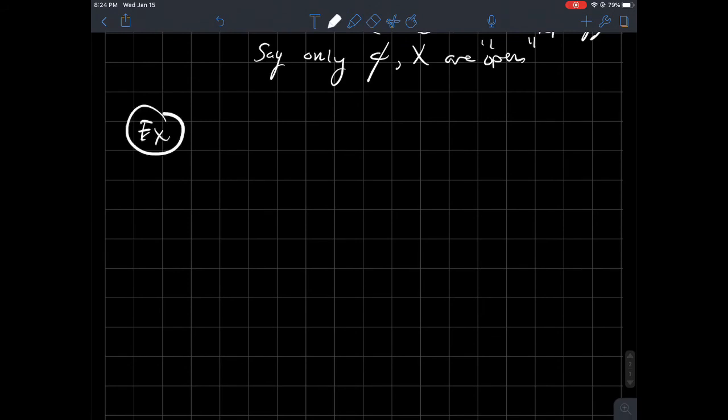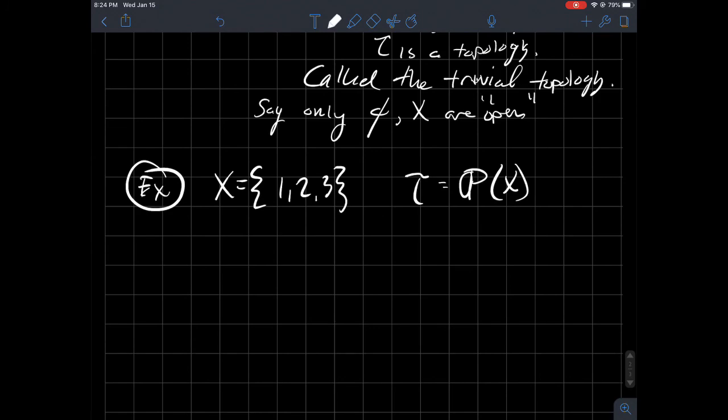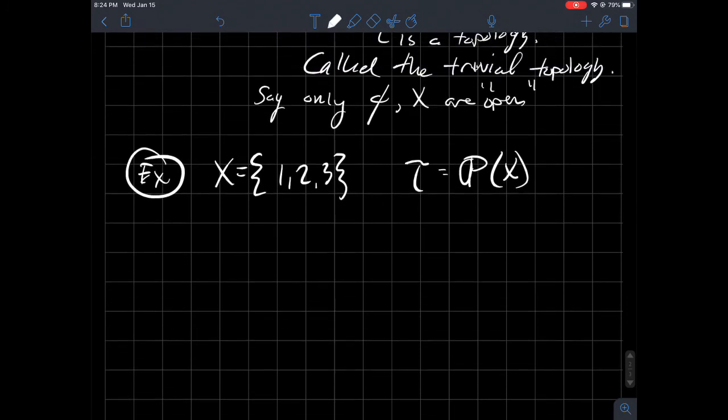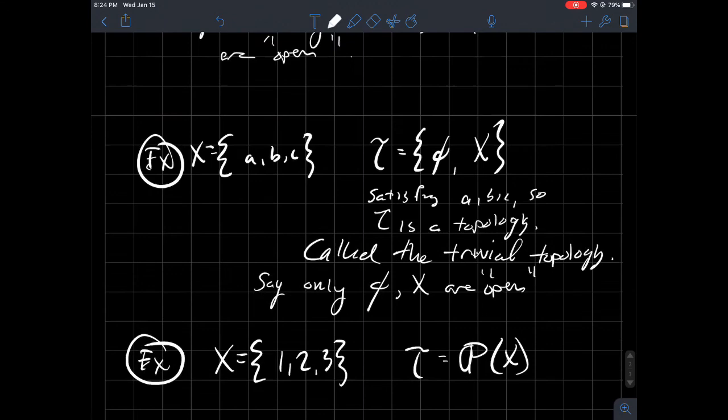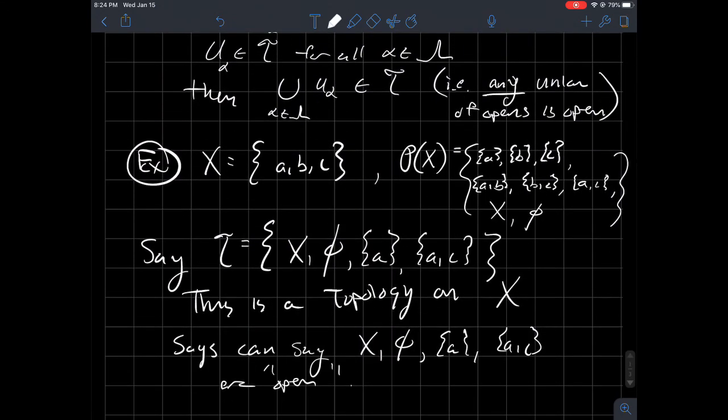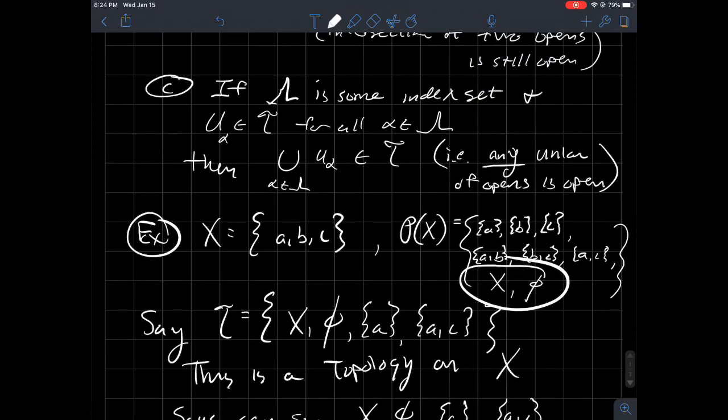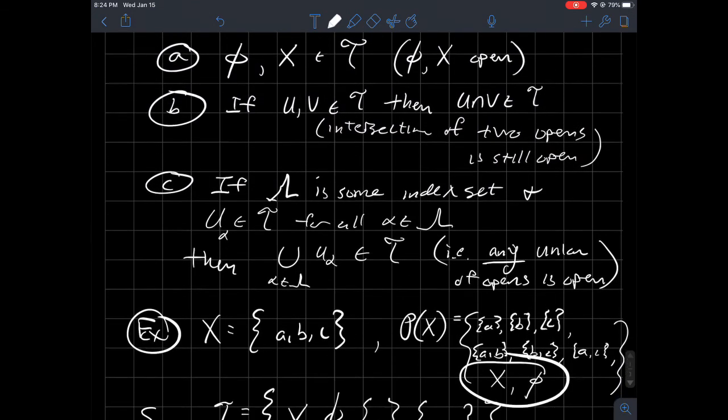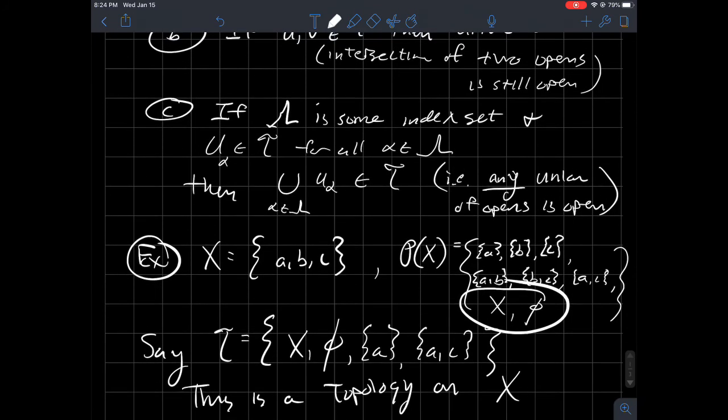And then we'll do one more. So let's say again, X is one, two, three. What if I just took the topology to be equal to the entire power set of X? And so what is that going to be? Does that satisfy A, B, and C? And so if we go look through, well, if I take the whole power set of X, I've already written it down here. In that case, sure. I get A. What was A? What am I referring to? That the empty set and the whole set are in there. There it is. Cool.